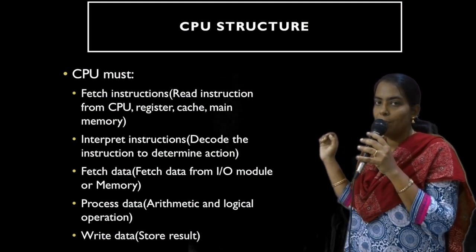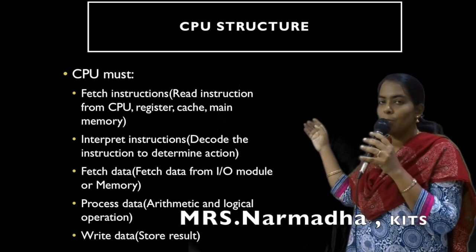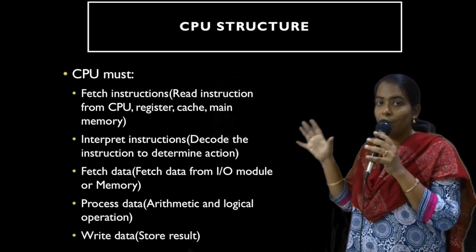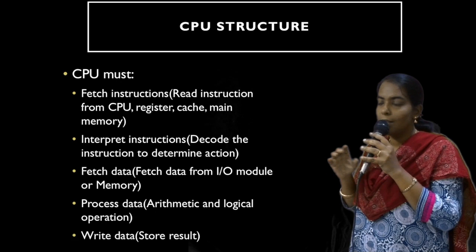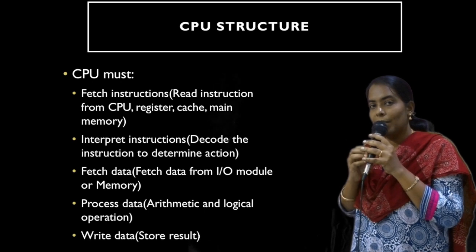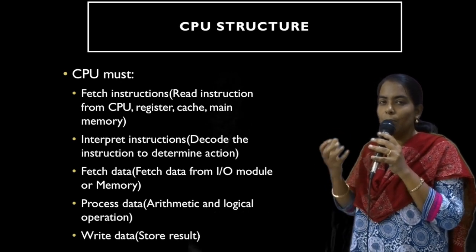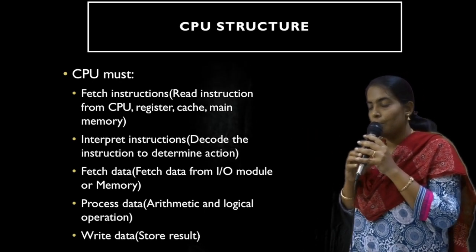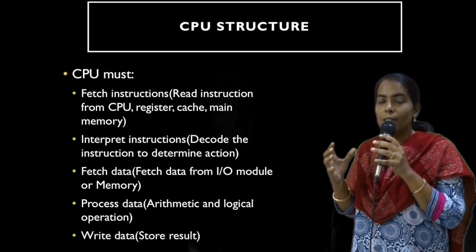The first responsibility of the CPU is to fetch the instruction. The CPU should be able to fetch the instruction from registers, memory, or cache memory. The second functionality is interpreting the instruction — that is, decoding the instruction so that the processor will be able to understand whether it is going to perform an addition, subtraction, or multiplication. The third functionality is fetching the data.